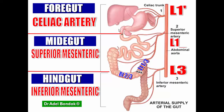The duodenum, which develops from the foregut and the midgut, is supplied by two arteries. The upper half is supplied by the celiac artery, and the lower half is supplied by the superior mesenteric artery. Similarly, the transverse colon is developed from the midgut and the hindgut, so it is supplied by two arteries: the right two-thirds by the superior mesenteric artery, and the left one-third by the inferior mesenteric artery.